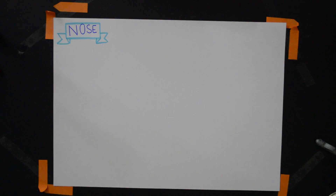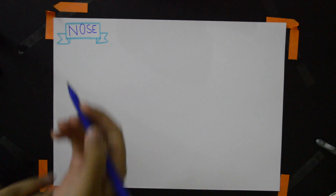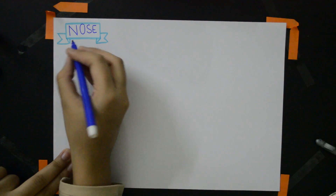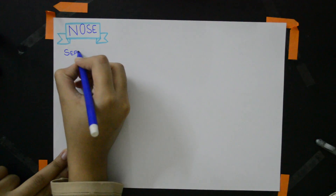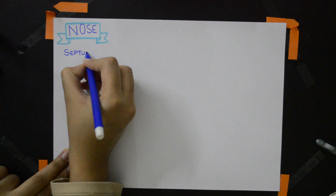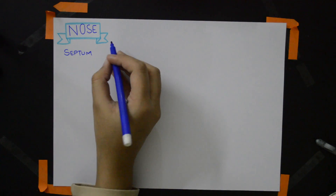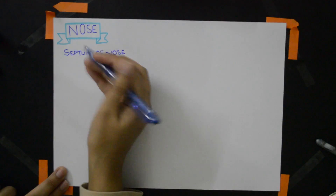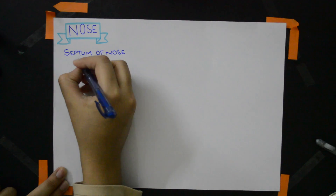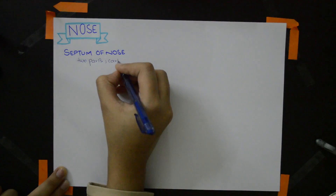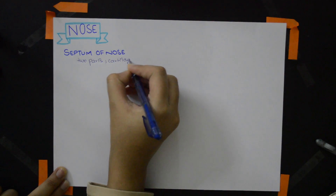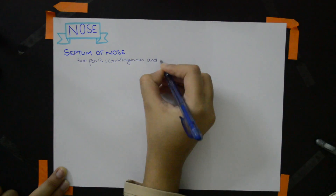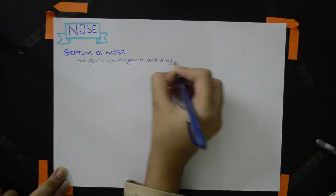The topic that we're going to start now is the nose. The first part of the nose that we're going to start is the septum of the nose. The septum of the nose has two parts: cartilaginous and a bony part.